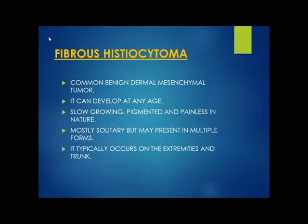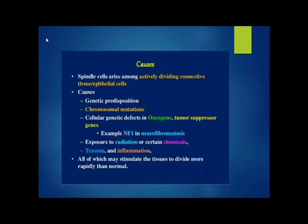It typically occurs on the extremities and trunk. Causes which may stimulate the tissues to divide more rapidly than normal include genetic predisposition, chromosomal mutations, cellular genetic defects in oncogenes and tumor suppressor genes — e.g., NF1 in neurofibromatosis — exposure to radiation or certain chemicals, trauma, and inflammation.